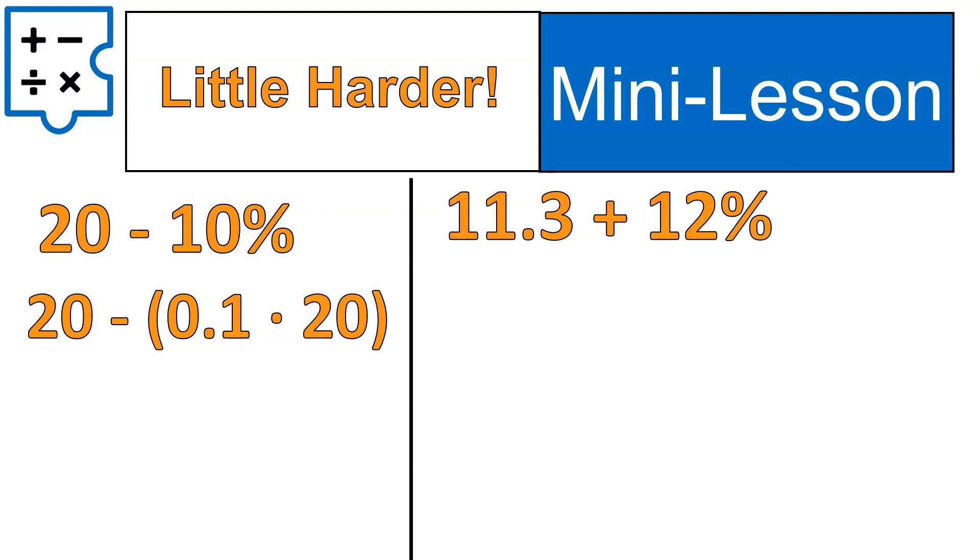20 minus 10% of 20. 10% is 0.1 times 20, which gives us 2, and 20 minus 2 is 18. So, that's how we would solve this first question. That one actually wasn't quite as bad.